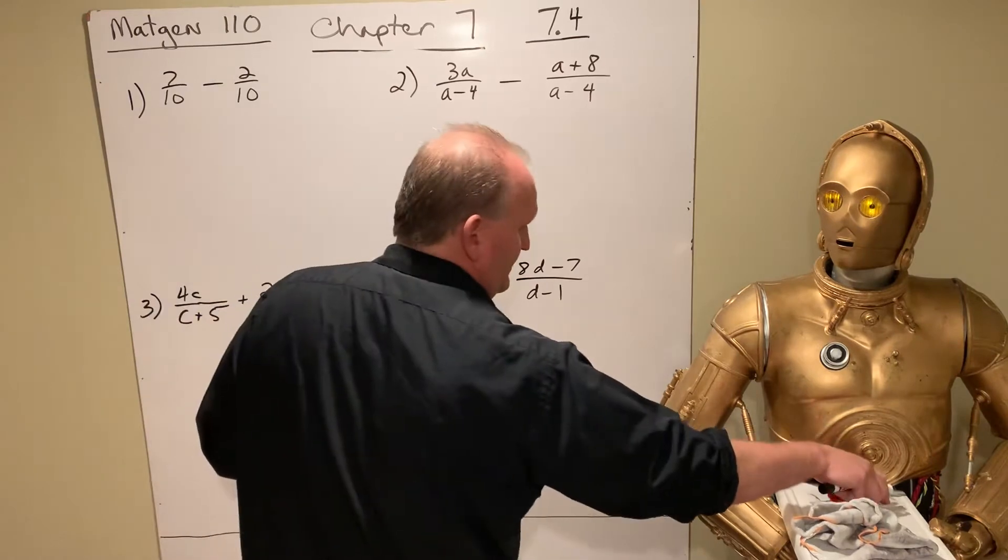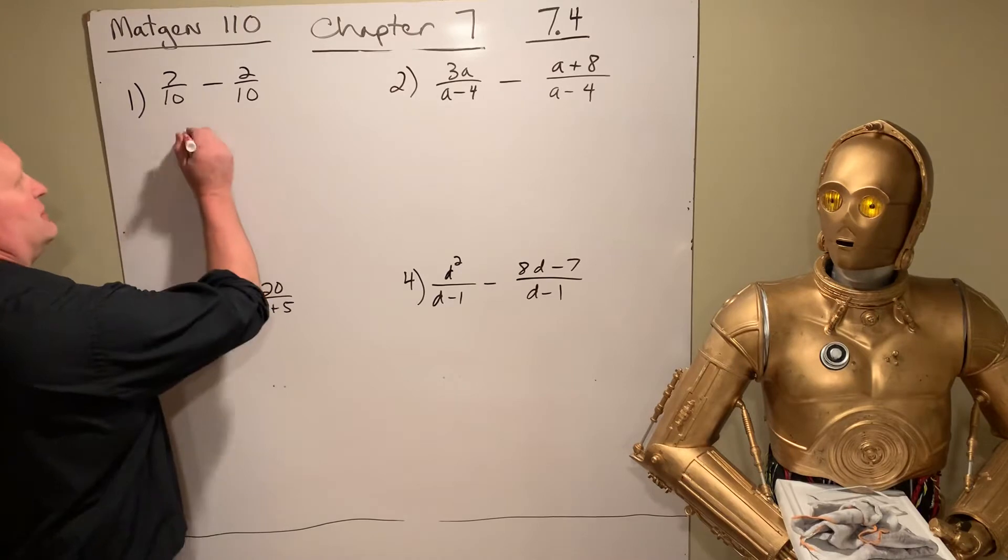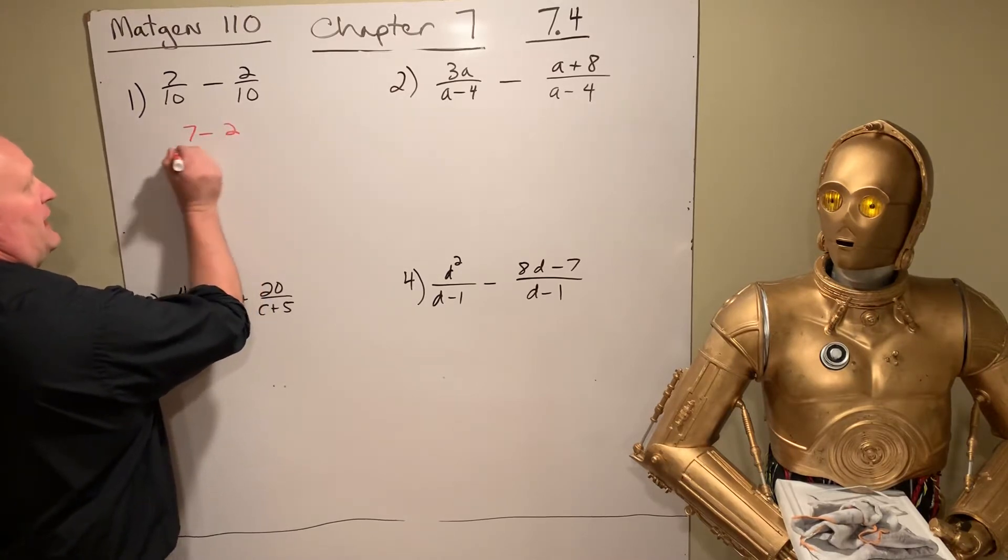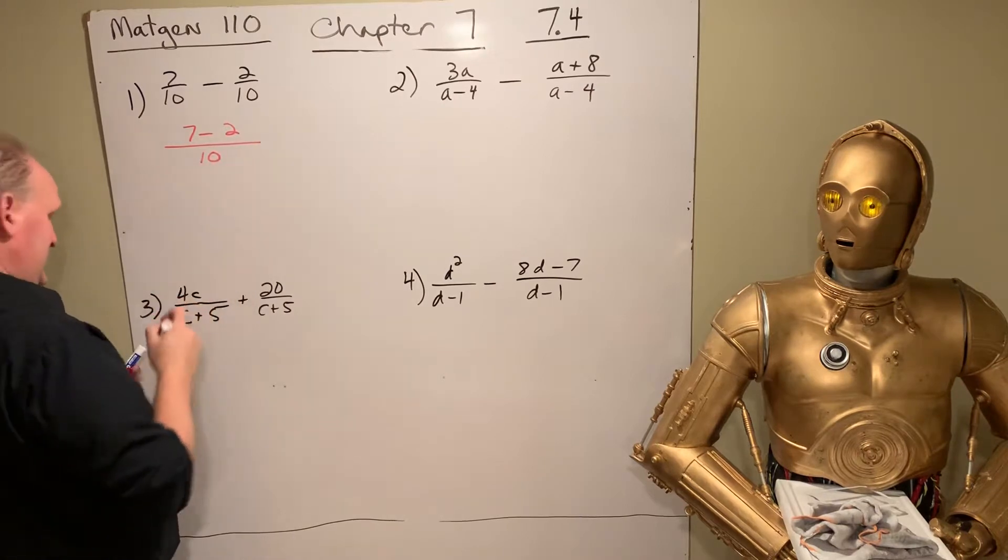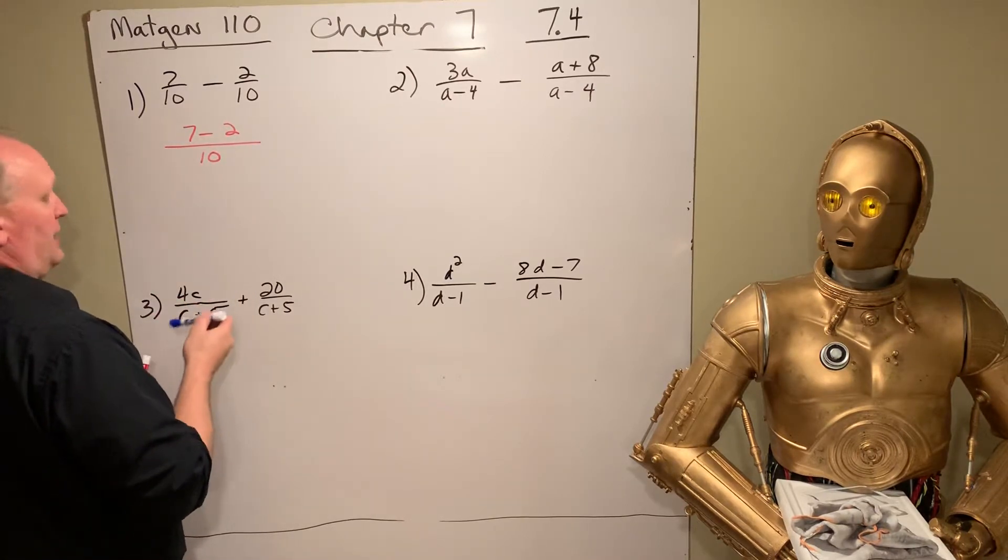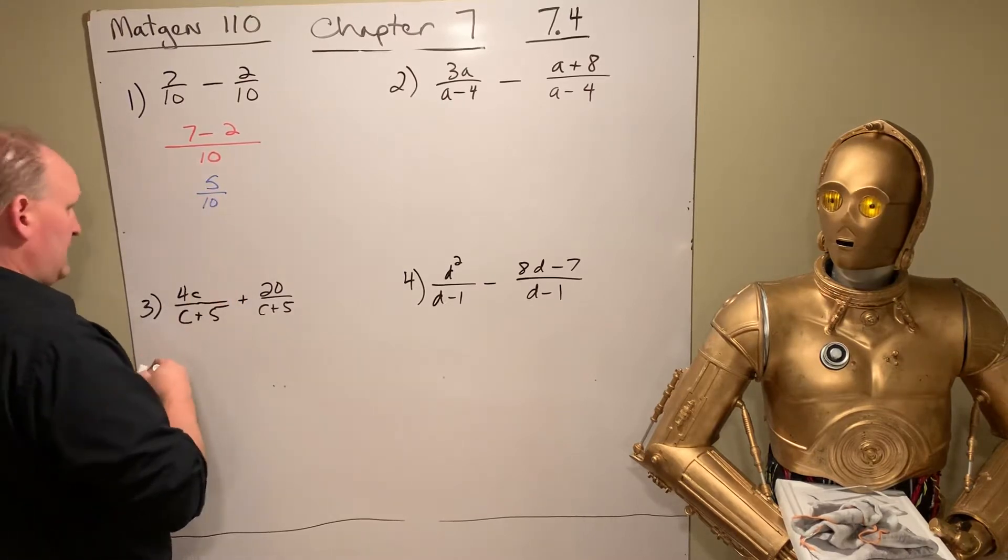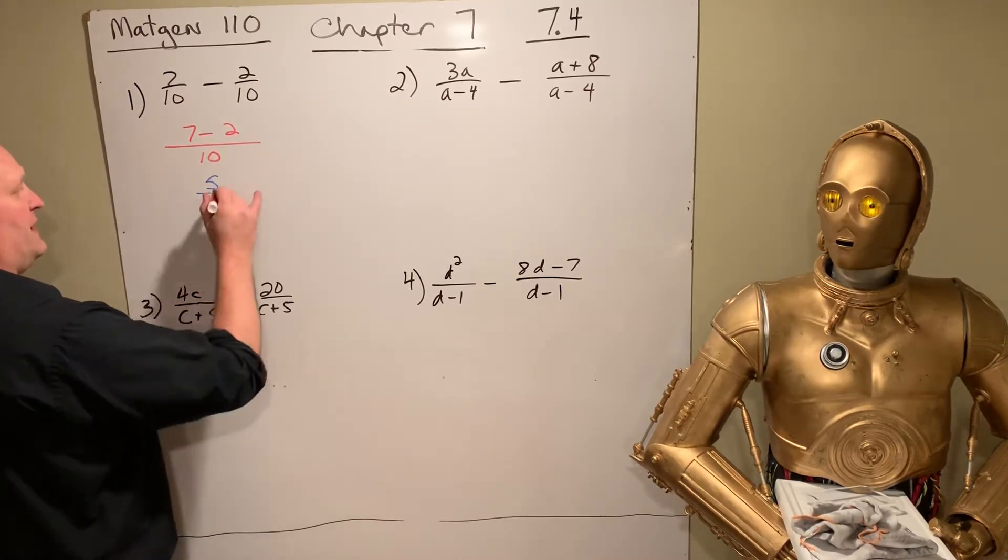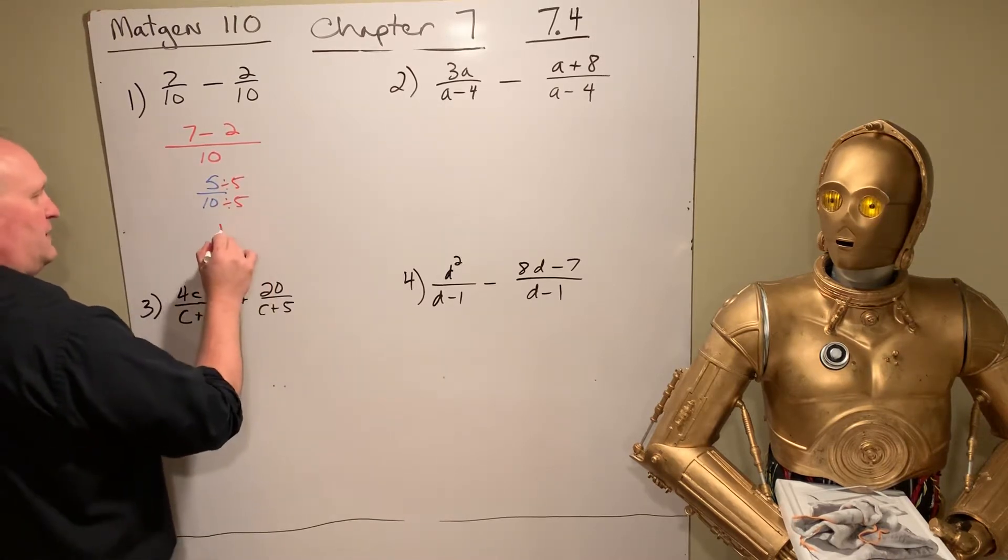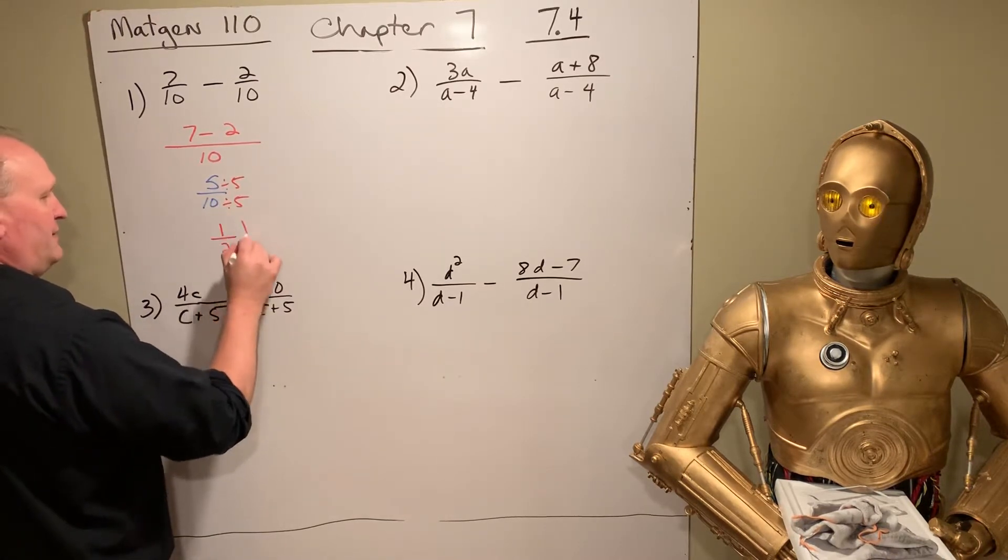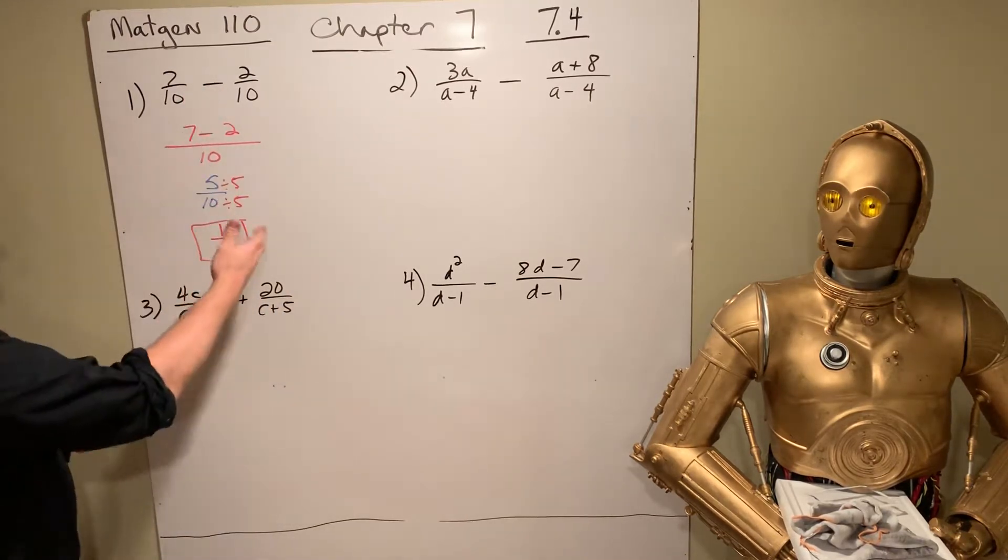When we're adding fractions with common denominators already, all we have to do is rewrite it all under the same roof, all over 10 in this case, and then 7 minus 2 is 5 tenths, and then we reduce that. We could reduce by a factor of 5, divide top by 5, bottom by 5, we get 1 half. Perfect. So that was a trip down memory lane.